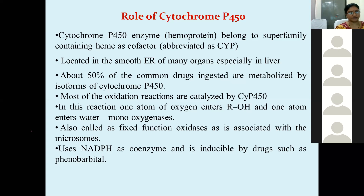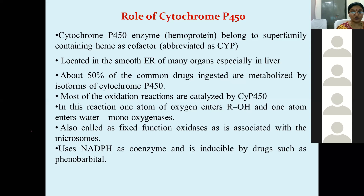Most oxidation reactions are catalyzed by Cytochrome P450. It is a monooxygenase — one atom of oxygen enters the product being produced, and the other becomes water. It is also called mixed function oxidase because it is present in the microsomes of the cell. Cytochrome P450 has the co-enzyme NADPH, which is produced by the HMP shunt pathway, and is used as a co-enzyme for these reactions.